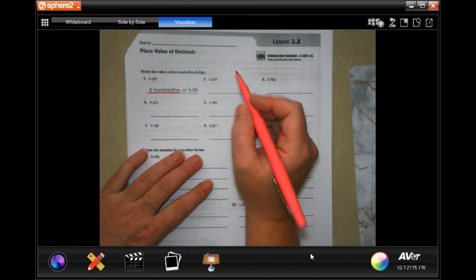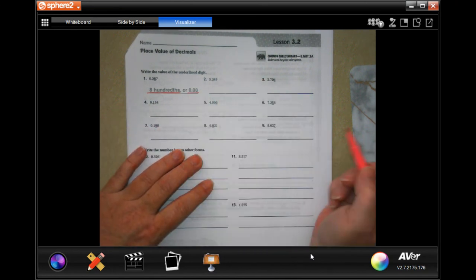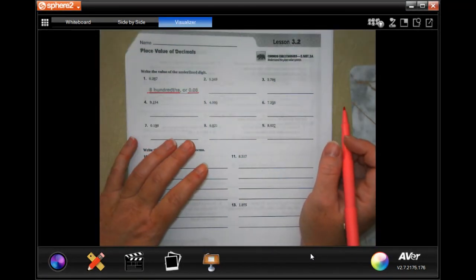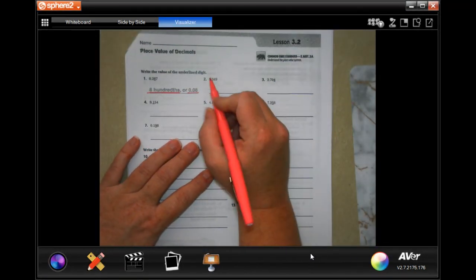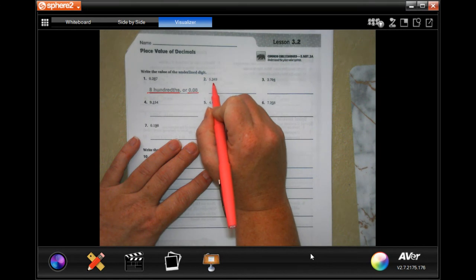However, you can also write it like this, which of course makes it easy for us. So on here it just wants to know the value of that number. So you can write three tenths or you can write 0.3. It only wants to know the value of that number.